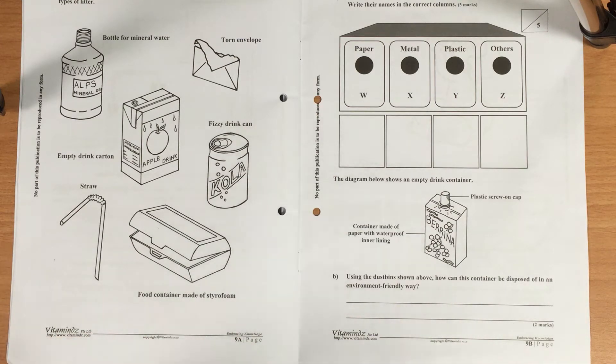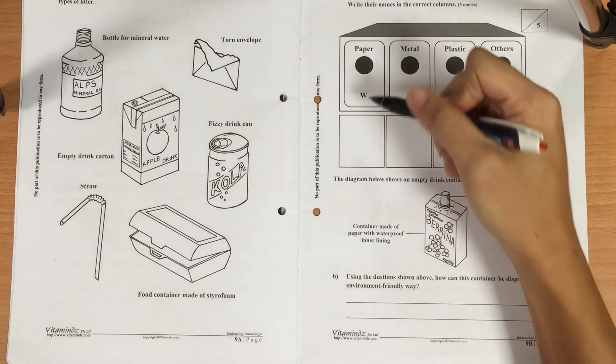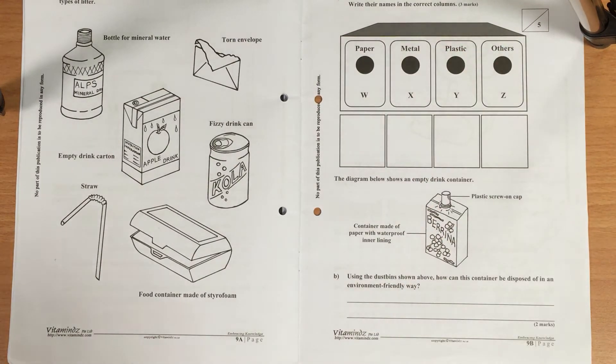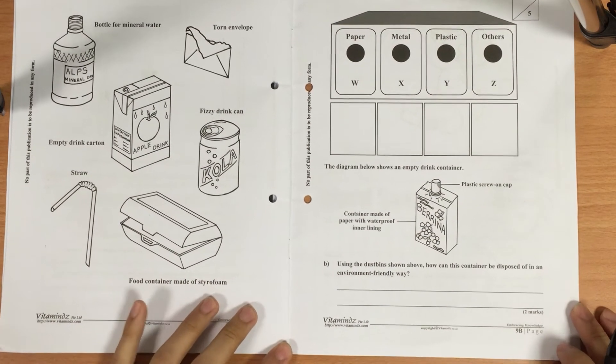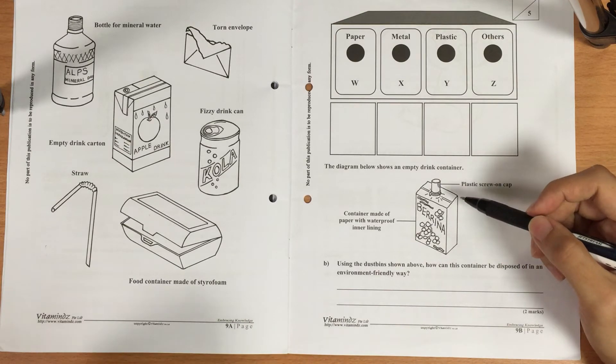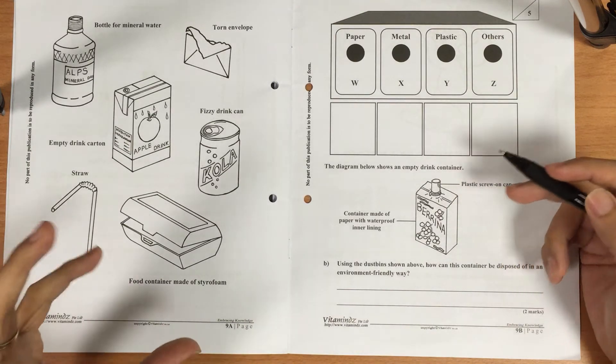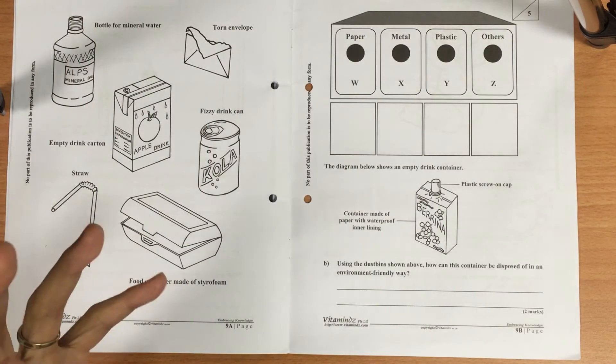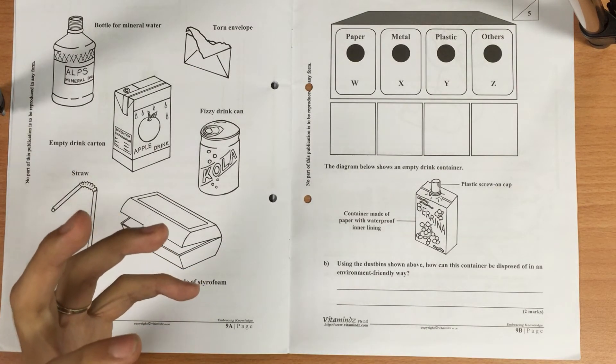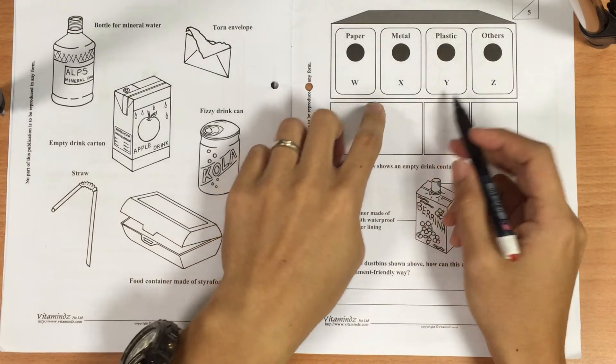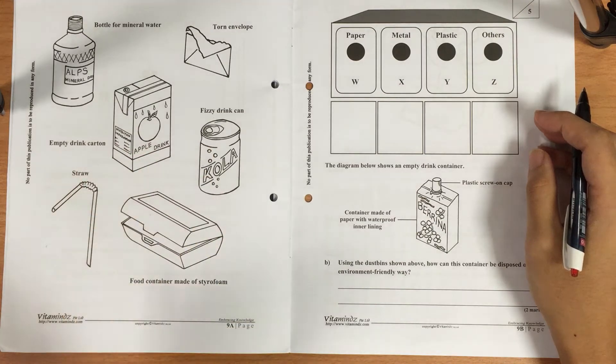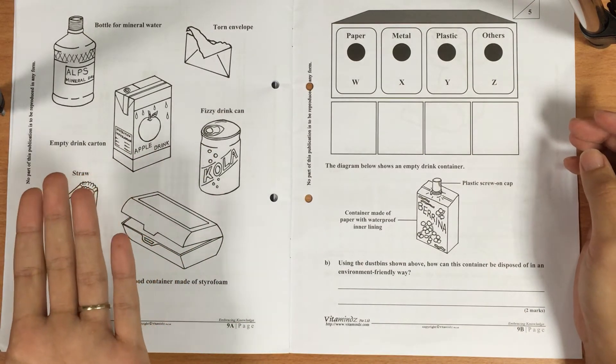The other thing, part B - now you have this Ribena container, like a Ribena packet drink, right? You have the plastic screw cap and you have the paper container. So now, out of these four different dustbins, which one will you place it in? You cannot just place it in one of the containers. You should actually separate them. You take out the plastic screw cap, put it into plastic, that'll be dustbin Y. Paper goes into dustbin W.